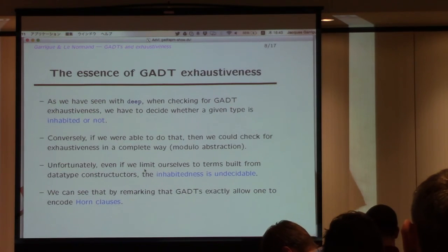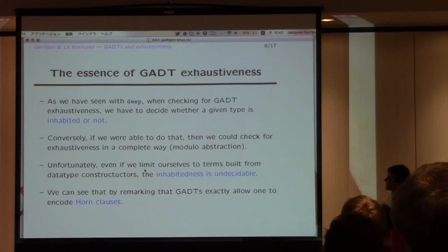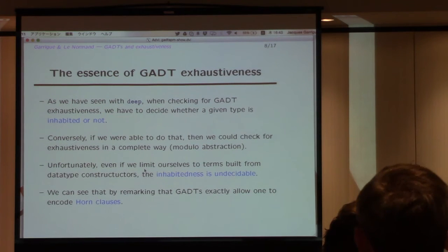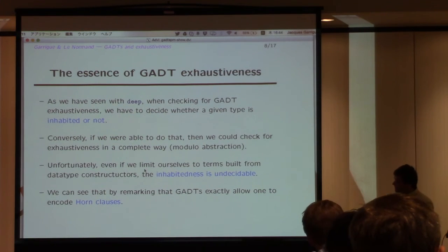Now, back to my main subject. What is the essence of the problem of GADT exhaustiveness? Actually, as we've seen with deep or with our asymmetric case, is that when checking for GADT exhaustiveness, we end up having to decide whether a given type is inhabited or not. Which is actually a rather hard problem, because, well, if we were able to do that, then we could check for exhaustiveness in a complete way, if this were decidable.